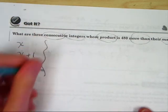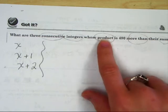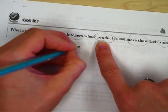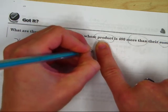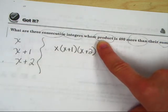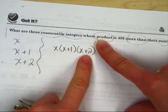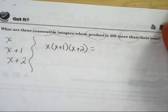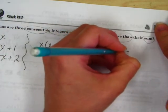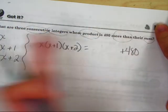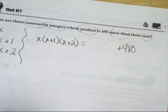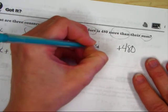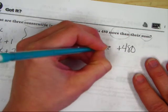All right. So we got those labeled. The next thing we need to do is find their product. So their product means to multiply them all together. So that represents their product. x times (x + 1) times (x + 2). Their product is, so equals, 480 more than, so we do plus 480 in the back. You learned that in Algebra 1. Their sum. So x + (x + 1) + (x + 2).